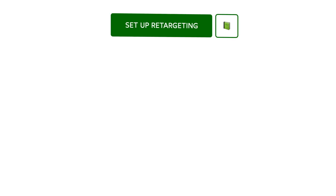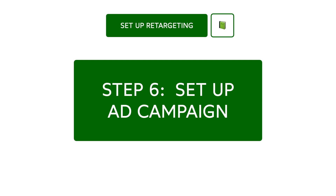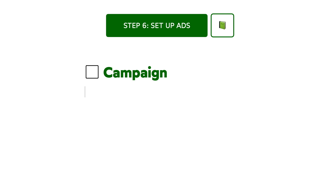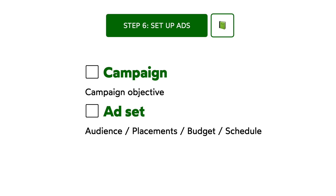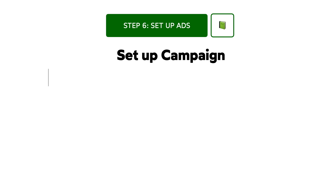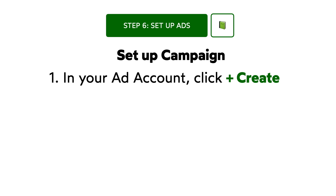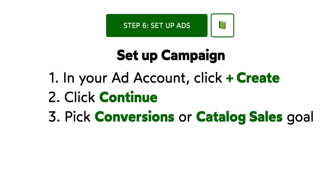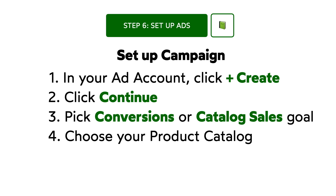Now we're getting to the actual ad setup. The ad creation workflow has three distinct levels: Campaign level, where you select the ad objective; Ad Set level, where you define the audience, choose placements, set a budget and schedule; and Ad level, where you design the ads themselves — choosing format, uploading images and videos, and adding text and links. In your ad account, click Create to open the Create a Campaign window. Select Continue to move to the editing pane, where you'll choose a campaign objective, audience, placement, and ad format. For retargeting ads, set the objective to Conversions or Catalog Sales. Remember to specify the catalog you created. You can enable campaign budget optimization now or keep it for later — you'll only need it if running more than one campaign at a time. Set the daily budget — you can start at as little as $5 a day. Under optimization and delivery, pick optimization for conversion events and select Purchases as the main event.